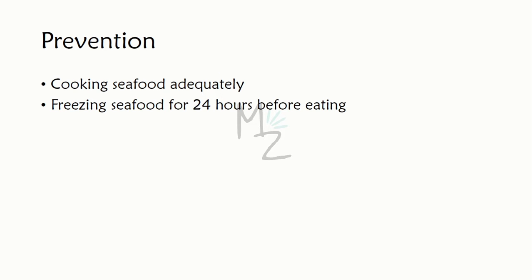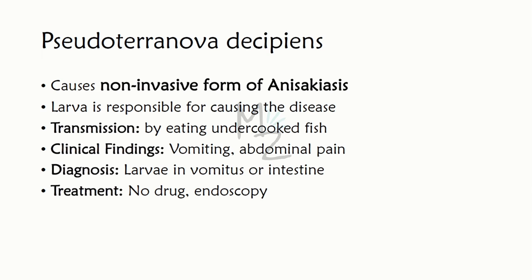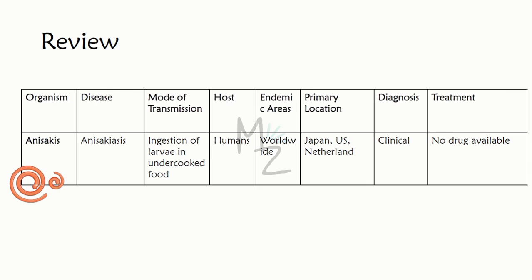Prevention: cooking seafood adequately or freezing it for 24 hours before eating. Pseudoterranova decipiens causes the non-invasive form of anisakiasis; its larvae cause disease via eating undercooked fish, responsible for vomiting and abdominal pain. Diagnosis is made by finding larvae in the intestinal tract or vomitus; there is no drug treatment — larvae can be removed during endoscopy.